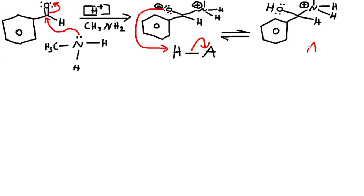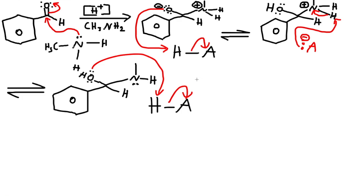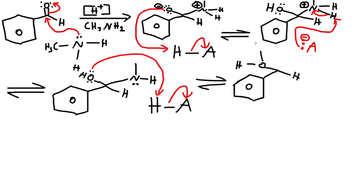The product at this point has a positive charge on nitrogen and an alcohol. The acid comes in, grabs the hydrogen attached to nitrogen, and gives off the electrons to nitrogen so nitrogen can become stable. The outcome: we have the OH, and nitrogen now has a lone pair. The acid comes back again — oxygen grabs the hydrogen and kicks off the conjugate base.